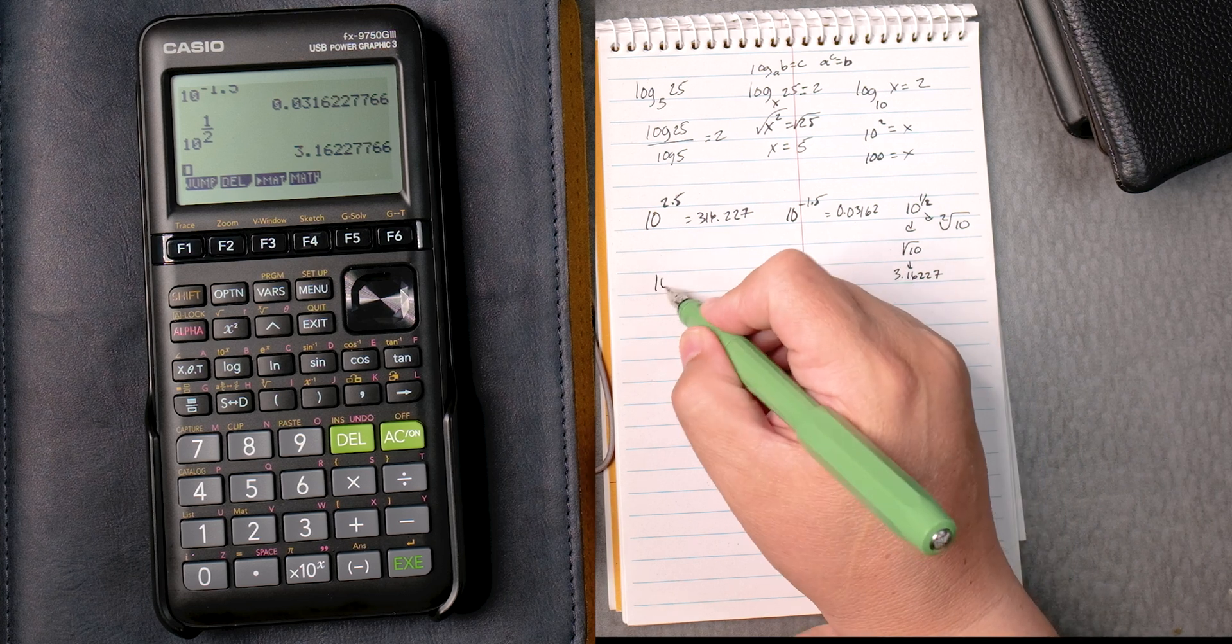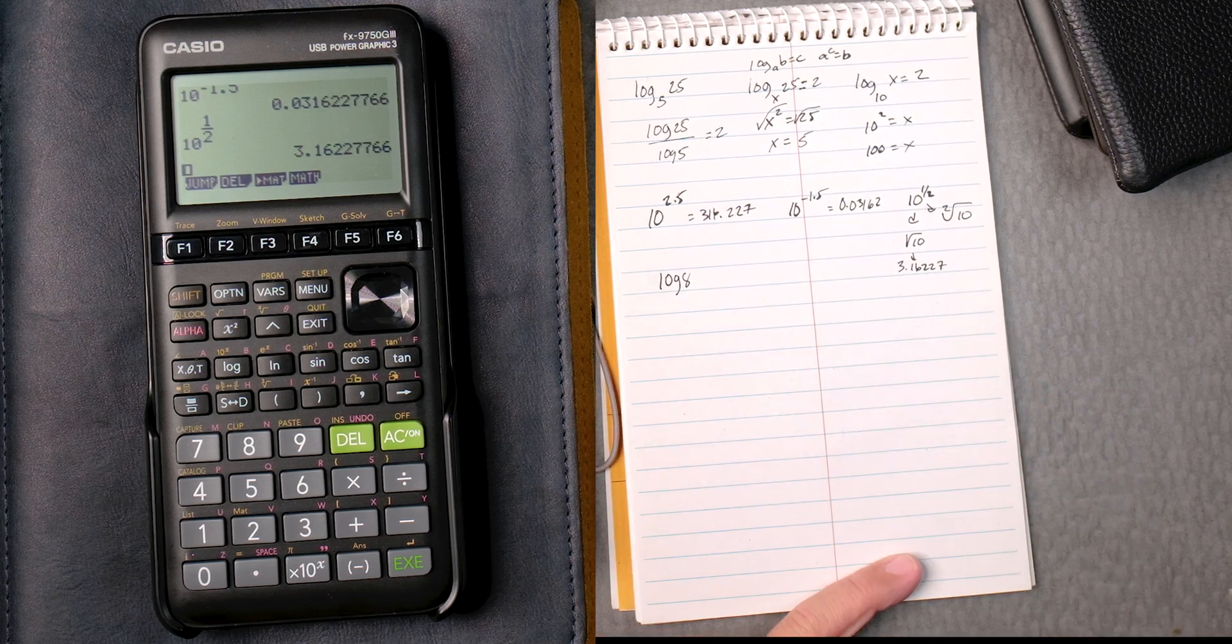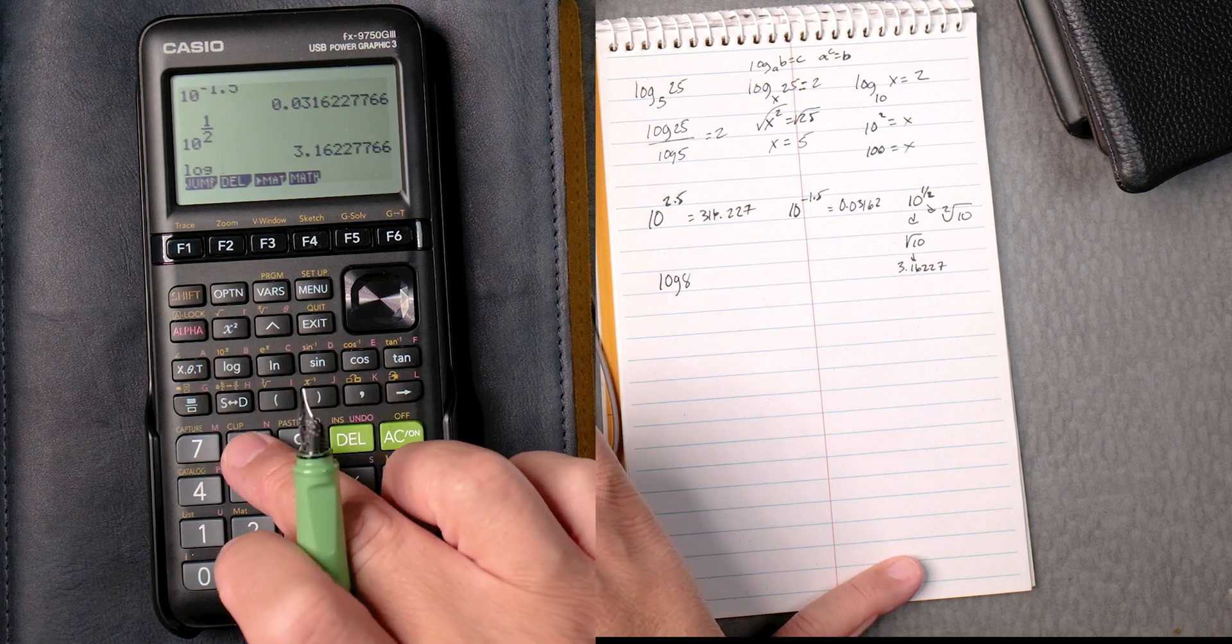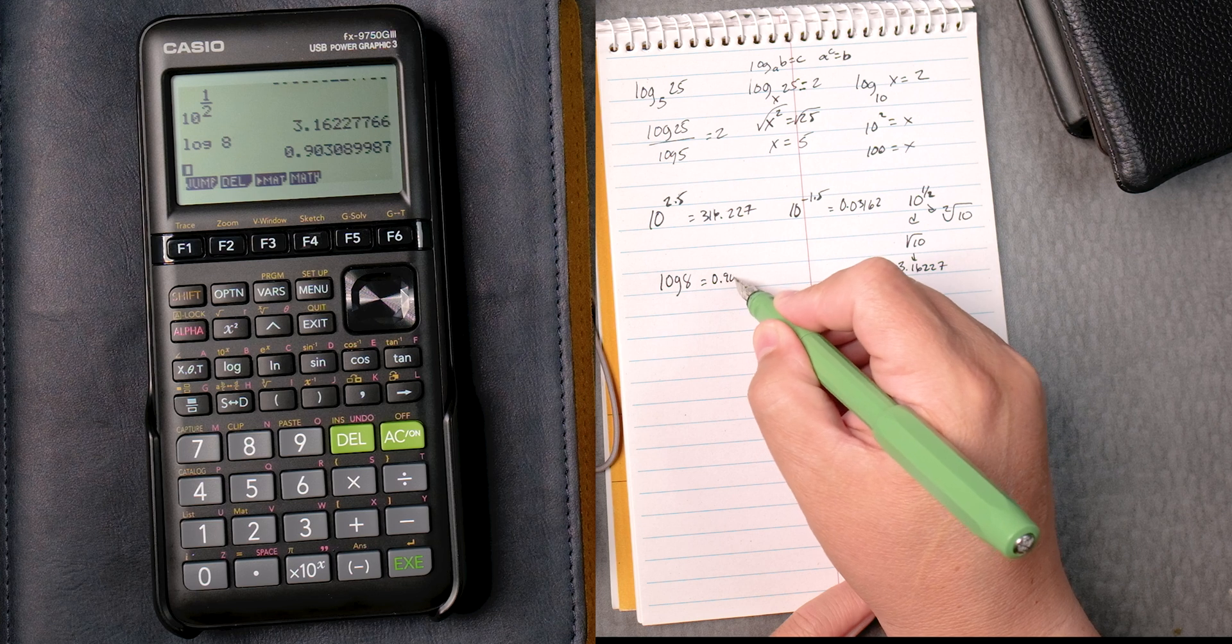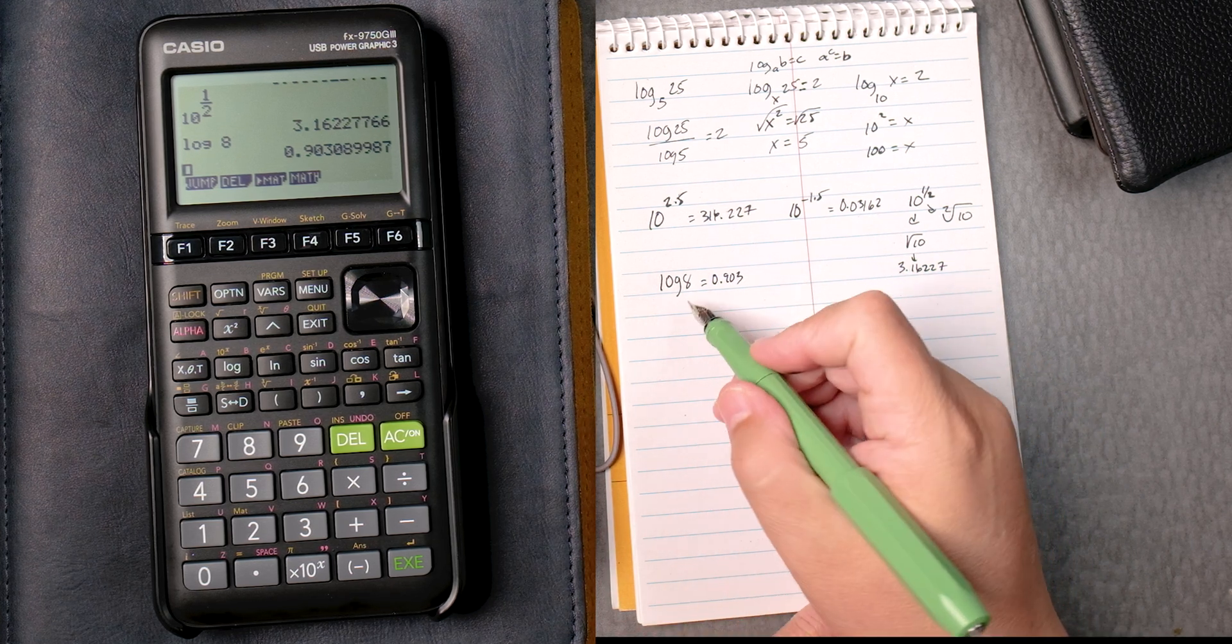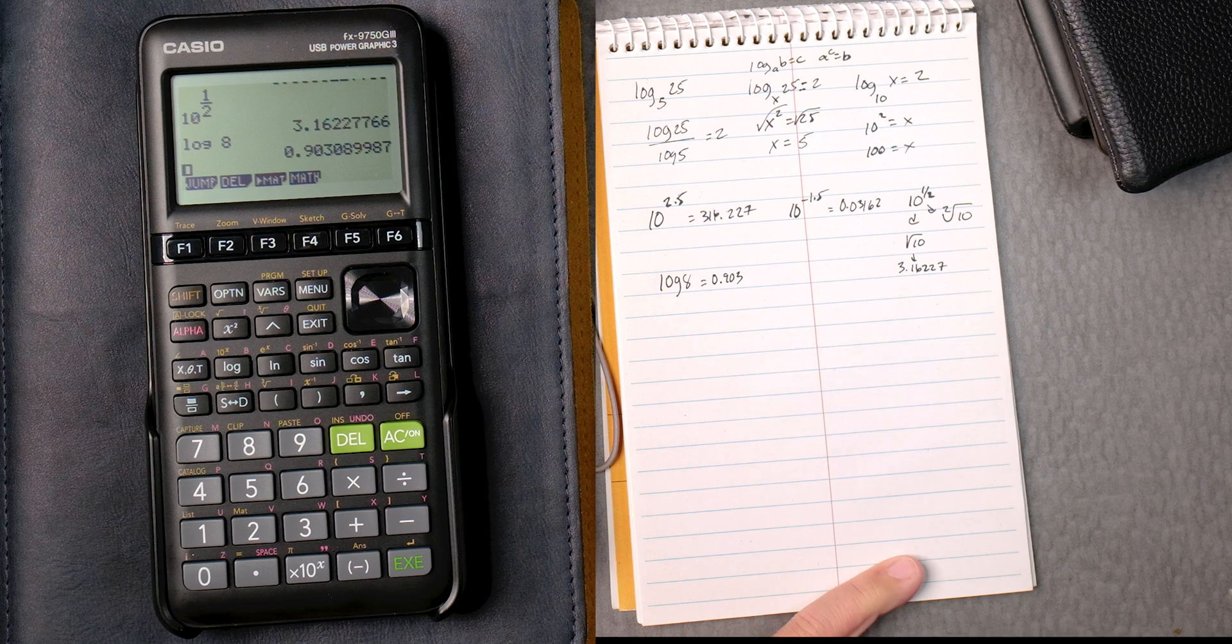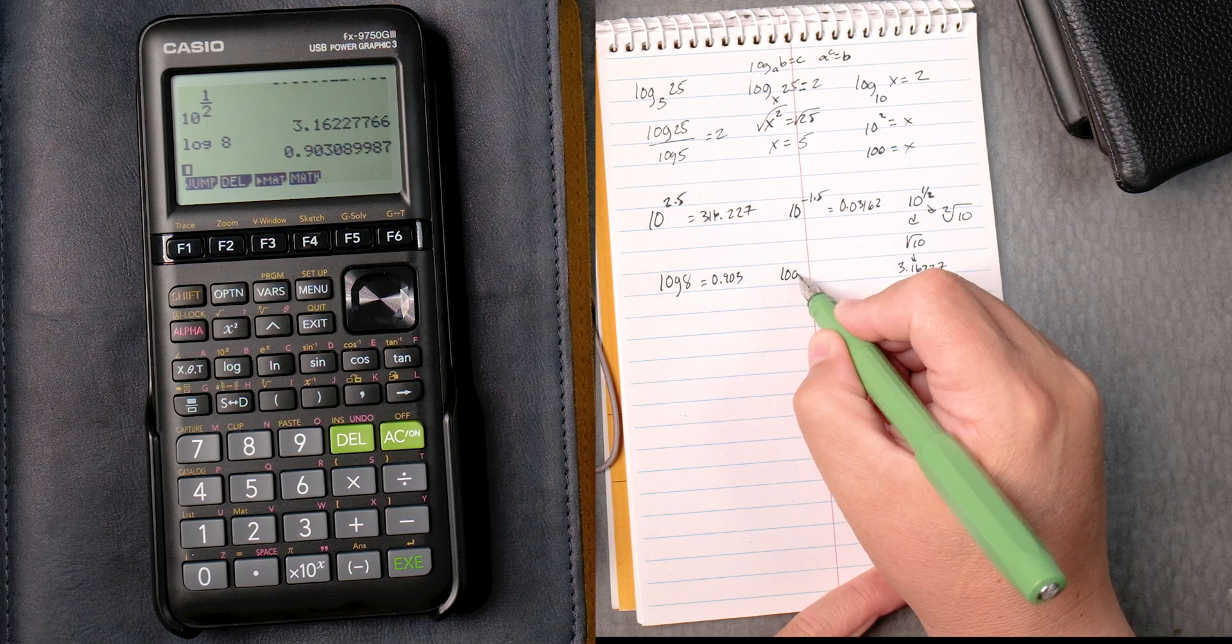Let's say the log of 8. So here we have the log. We press 8, we execute, it gives you 0.903. This one doesn't have the 10 because it's automatically known that it is if it's not written.